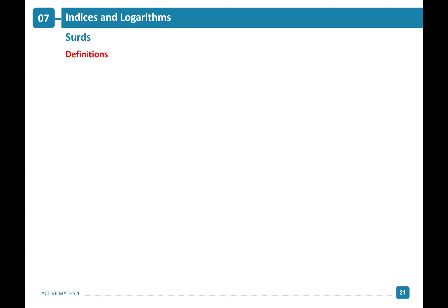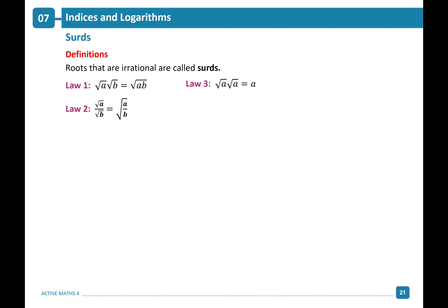Let's remind ourselves of our definitions and laws for surds. Roots that are irrational are called surds. Law 1 states that root A times root B is equal to the square root of A times B. Law 2 states that the square root of A divided by the square root of B equals the square root of A divided by B. And law 3 states that the square root of A times the square root of A equals A.